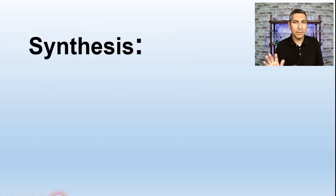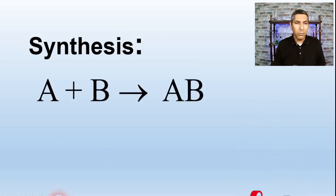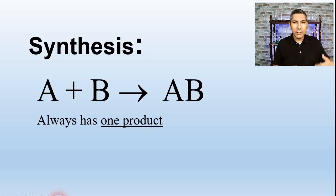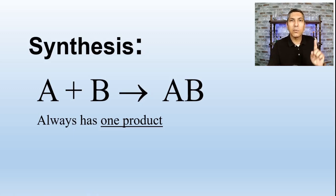As we move on and talk about the five types of reactions, the first type is called synthesis. In a synthesis reaction, we have two or sometimes more than two reactants that combine to form one product. This is the essential format of a synthesis reaction. Some teachers or textbooks call this combination — synthesis and combination reactions are the same thing. You can recognize a synthesis reaction because it always has one product.